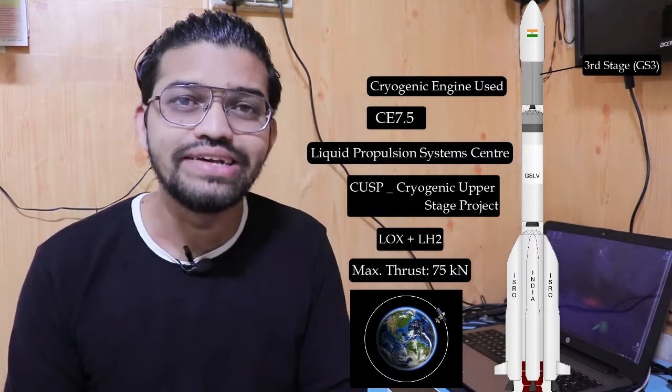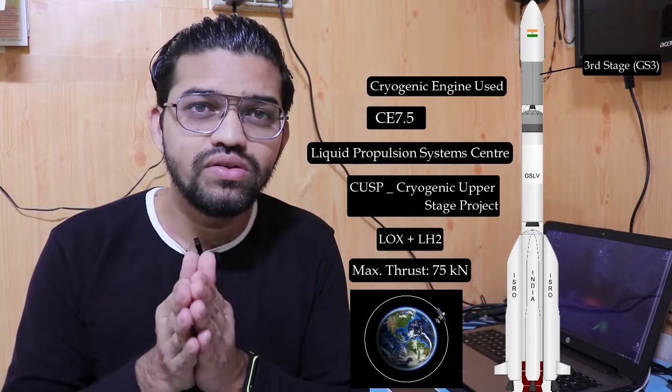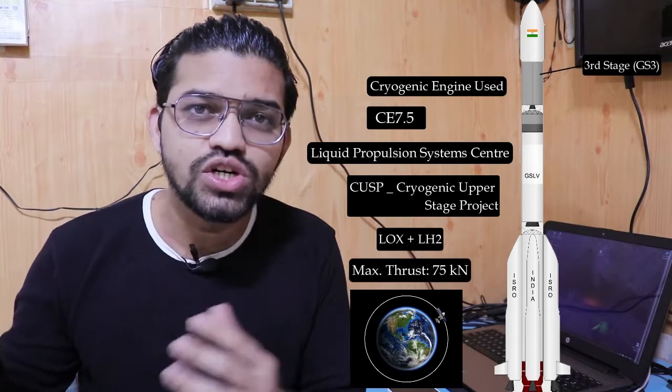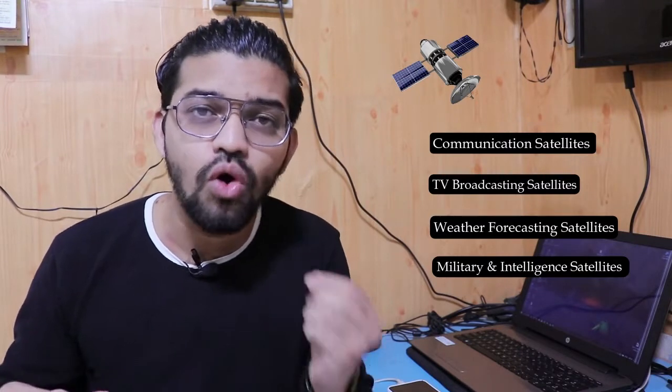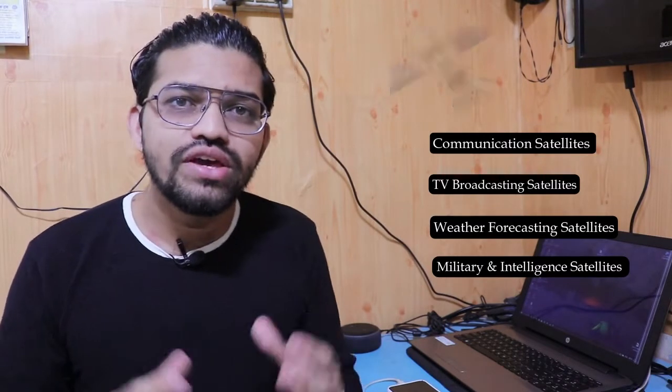These three stages are required to reach the GTO — Geosynchronous Transfer Orbit — at approximately 35,000 kilometers altitude. The main function of the GSLV is to transfer satellites into the GTO. The types of satellites launched include communication satellites, TV broadcasting satellites, weather satellites, and military intelligence satellites.